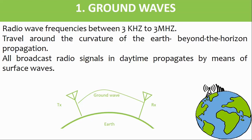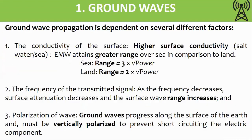This tilting allows the signal to follow the curvature of the earth, sometimes well beyond line of sight. The range achievable is dependent on several factors: the frequency, the surface over which the wave is traveling, and the polarization of the wave.